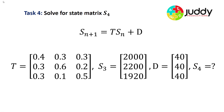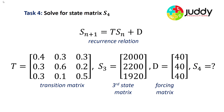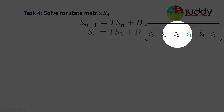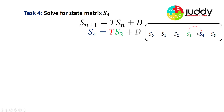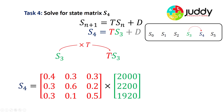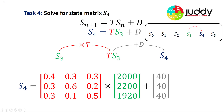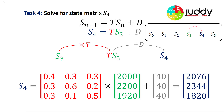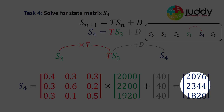Task number four is slightly different — we now have a forcing matrix recurrence relation. We have our transition matrix, our third state, a forcing matrix D, and we want to calculate the fourth state matrix, a simple forward projection. Moving from S3 to S4, it's not as simple as multiplying by the transition matrix because we have the additional forcing matrix D. The first step is to multiply the third state by the transition matrix, then the second step is to add the forcing matrix — 40, 40, 40. This gives a fourth state matrix of 2076, 2344, and 1820.